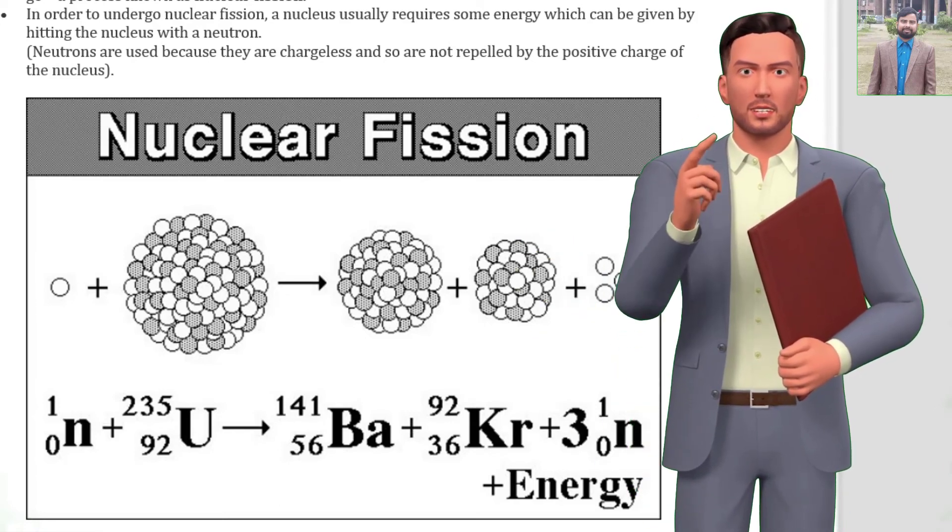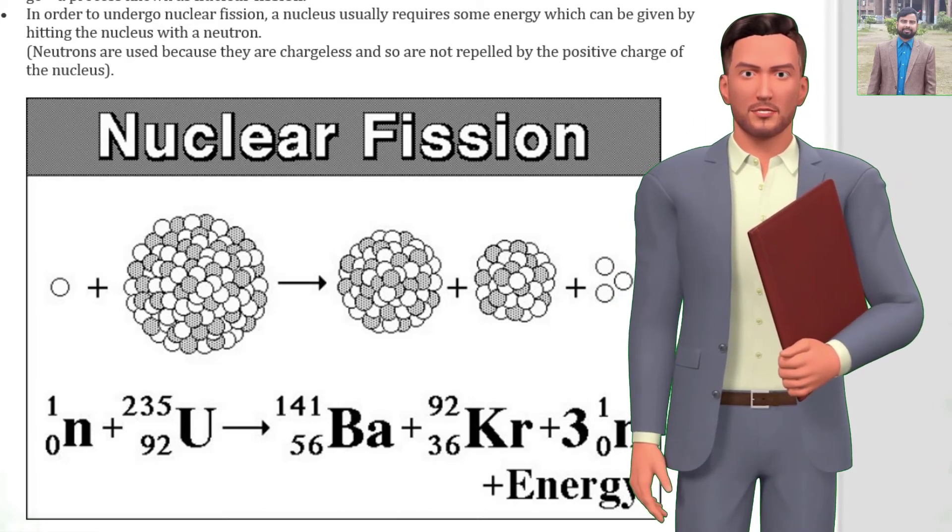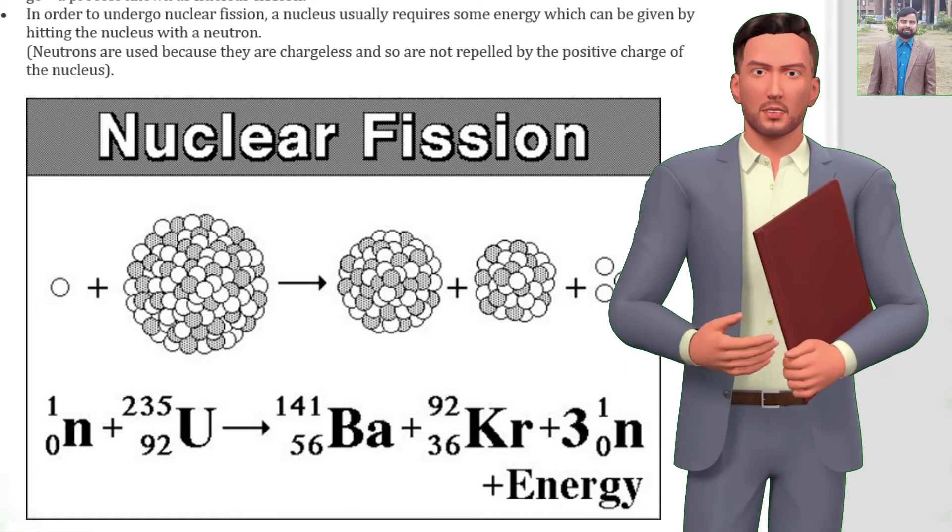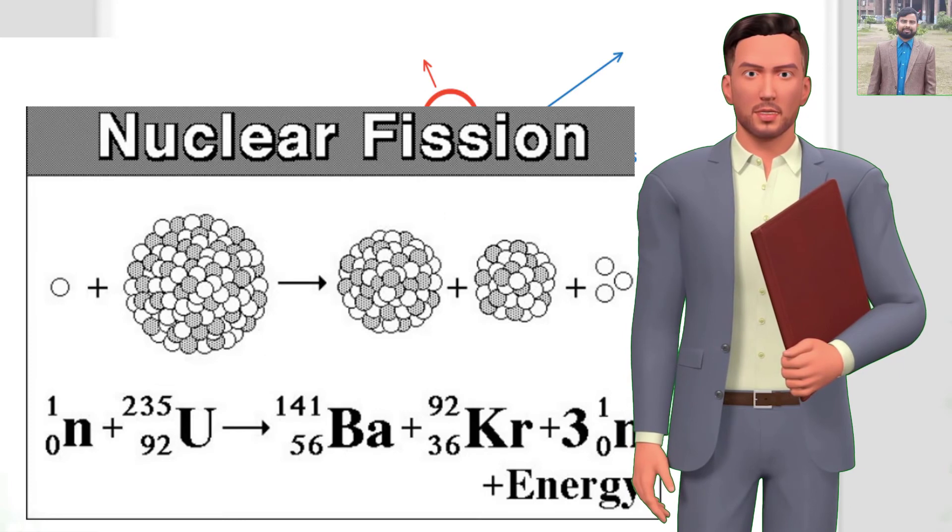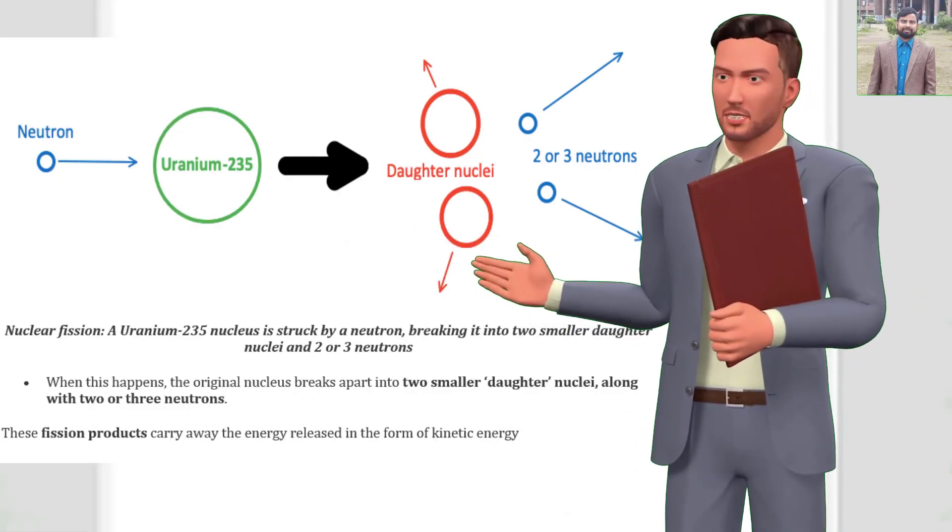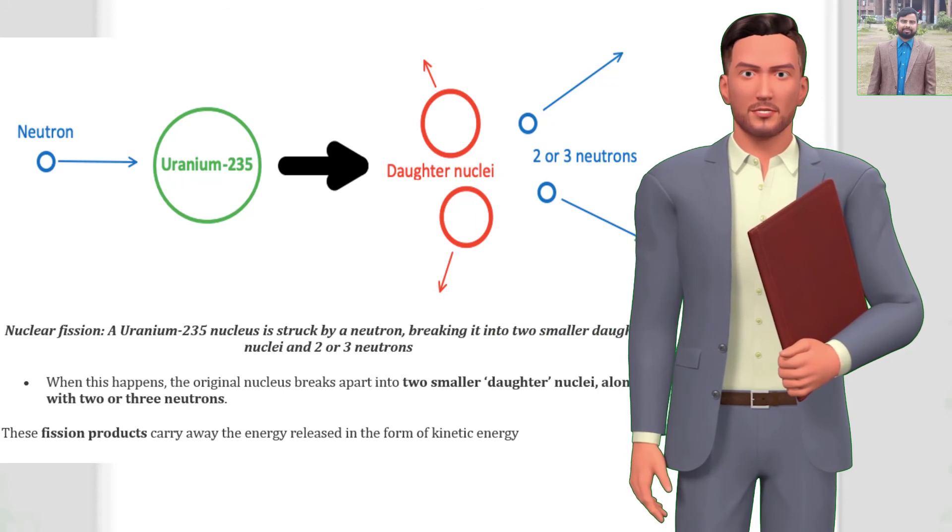In order to undergo nuclear fission, a nucleus usually requires some energy which can be given by hitting the nucleus with a neutron. Neutrons are used because they are chargeless and so are not repelled by the positive charge of the nucleus. When this happens, the original nucleus breaks apart into two smaller daughter nuclei, along with two or three neutrons.